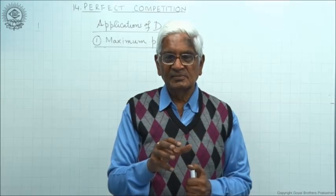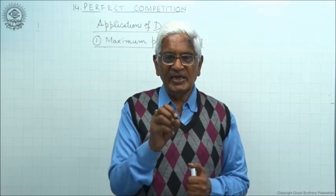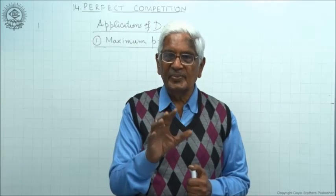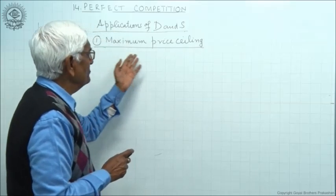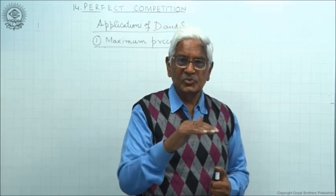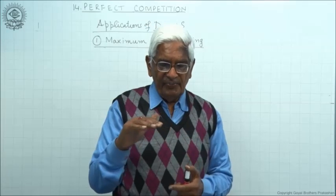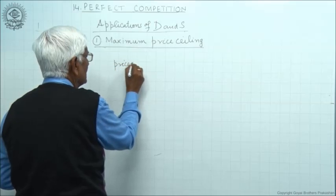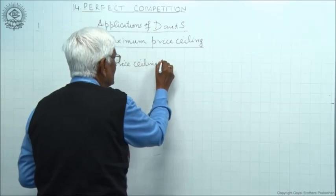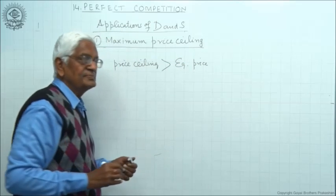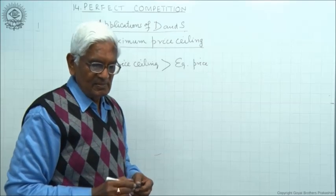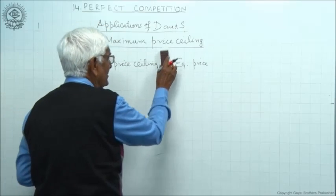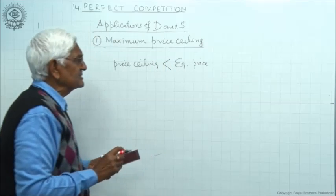Suppose the price of rice is too high. Government can fix a maximum price which should be less than the equilibrium price. Maximum price ceiling means the maximum limit a producer can charge — it's called price ceiling. If the price ceiling is higher than the equilibrium price, there is no need for it. Price ceiling can be successful only when it is less than equilibrium price.